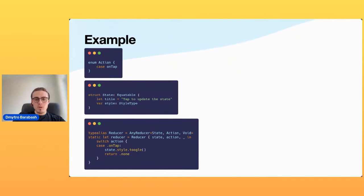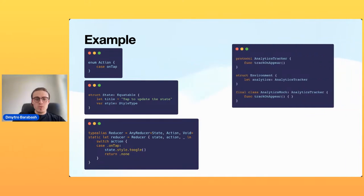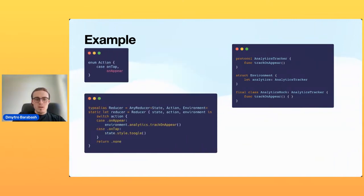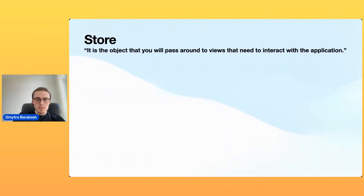The Reducer receives all actions from the Store — for example, in this case it receives a tap action and mutates the state through the previously created toggle function. For a basic example of Environment: assume we need to track an on-appear action and send it to an analytics service. I created an Analytics protocol and Environment which takes this as a parameter. You then create live and mock implementations as needed. We add an on-appear action, send it from the view, and handle it in the reducer by calling environment analytics track on appear.